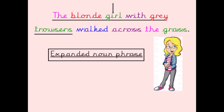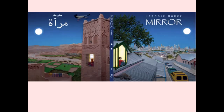So although 'blonde' is the adjective before 'girl', 'with grey trousers' is still describing the girl. Now we've reminded ourselves of what expanded noun phrases are, I want you to take some time to choose a page from the story that you want to describe. Tomorrow you're going to write a description of the scene that you are looking at, so I want you to look through all the pictures again and think to yourself which one would be best to describe in a paragraph of writing.